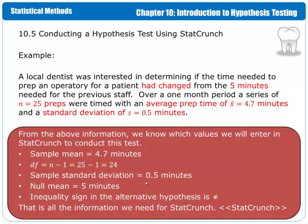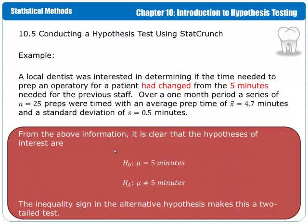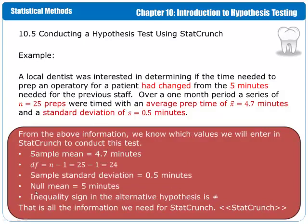We are trying to test the hypothesis that the prep time has changed from 5 minutes, so 5 minutes is the null mean. In the null hypothesis, the mean is 5, so our null mean is equal to 5. The inequality sign in the alternative hypothesis is not-equals. That is all the information we need for StatCrunch.